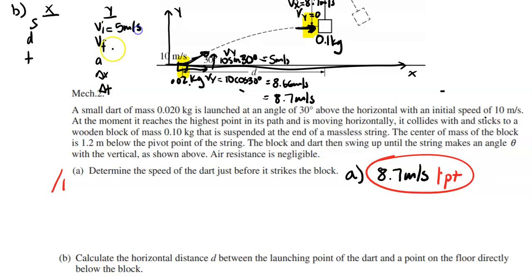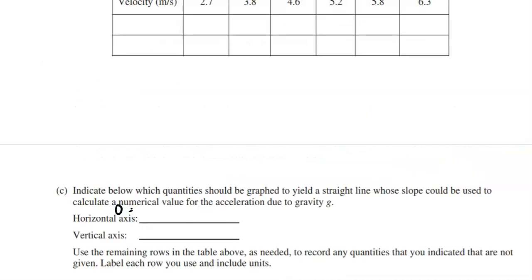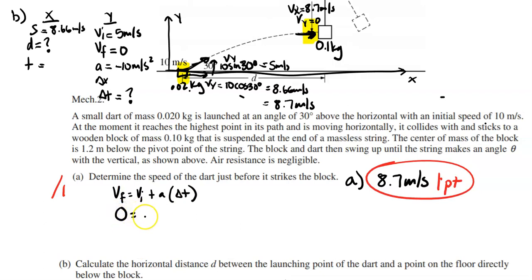In the y-direction: initial velocity is 5 m/s, final velocity is 0, acceleration is -10 m/s². The horizontal speed is 8.66 m/s, and we need to find D, which requires finding time T first — the same T in both x and y directions. Using VF = VI + A·Δt: 0 = 5 + (-10)·Δt, so Δt = 5/10 = 0.5 seconds.